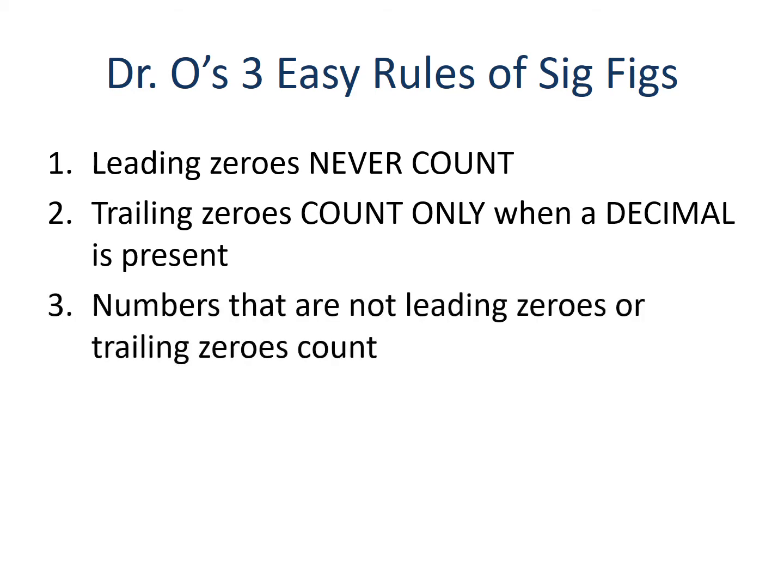Rule number three: numbers that are not leading zeros or trailing zeros count. This rule tells us that any number between one and nine will count, as well as any zeros that may be sandwiched in between those numbers. So these are the three easy rules — now let's look at some examples.